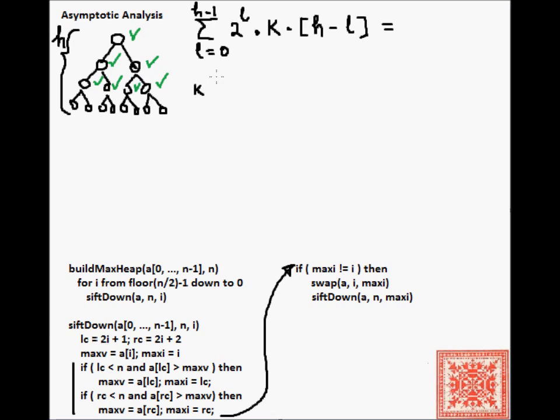If we are at level 0, then we have to go down h levels, and at level 1, we have to go h-1 levels, and so forth. Let's work with this sum.